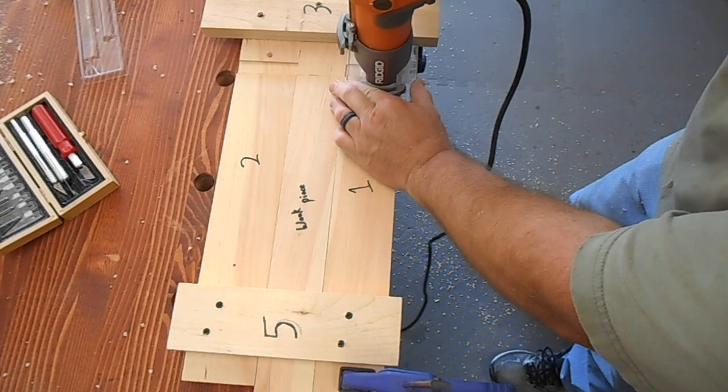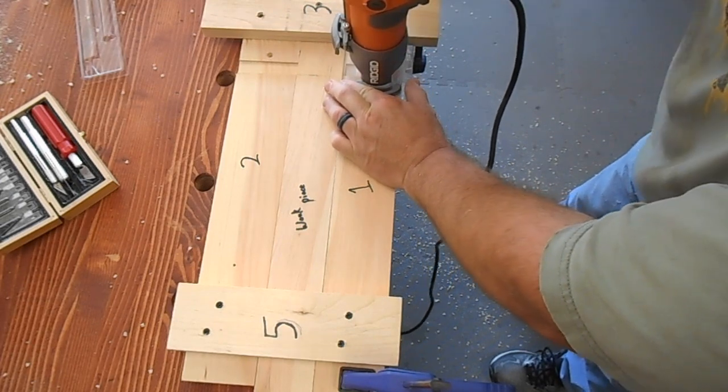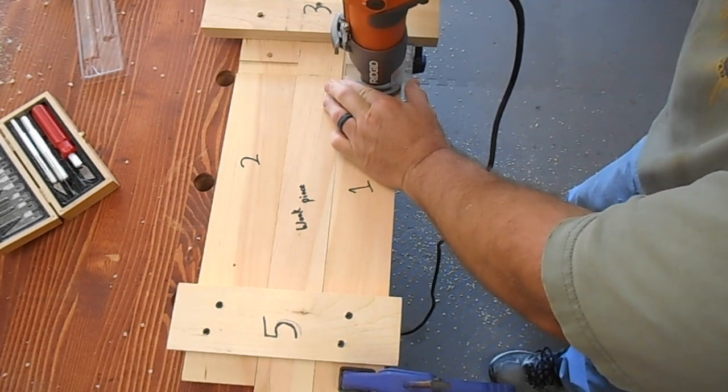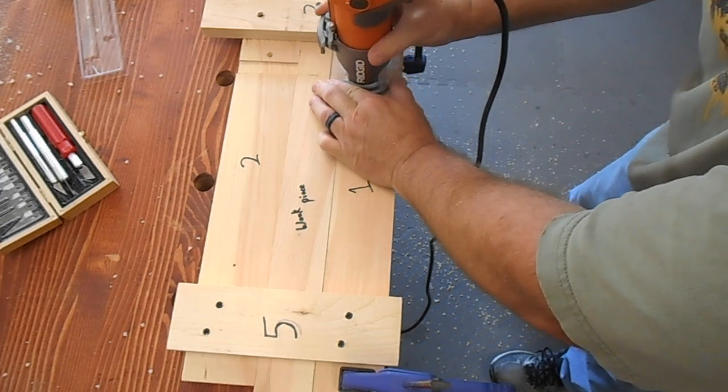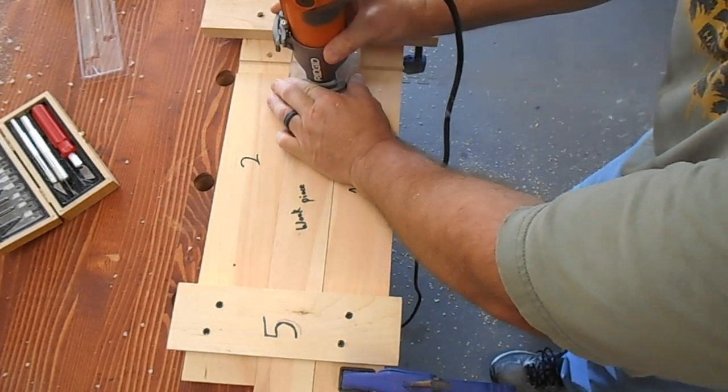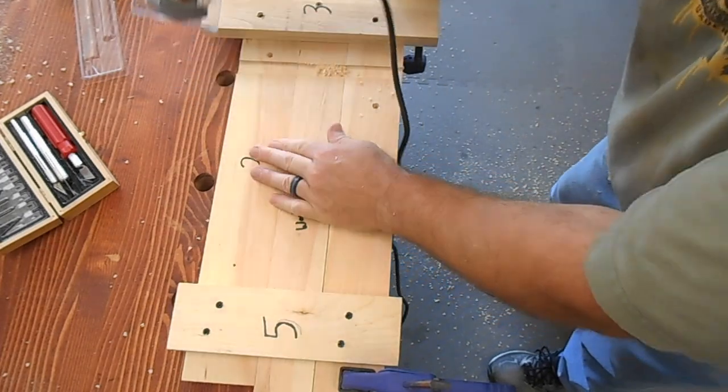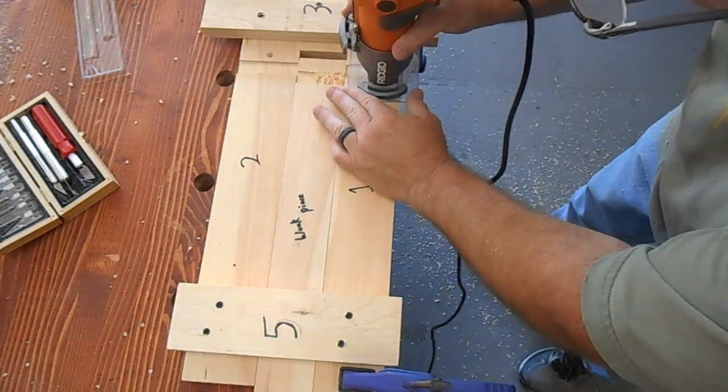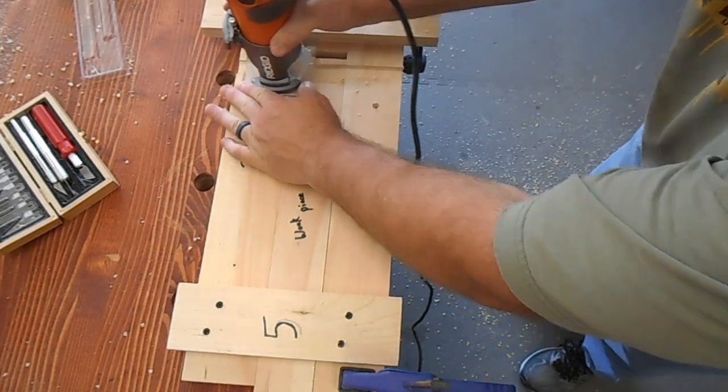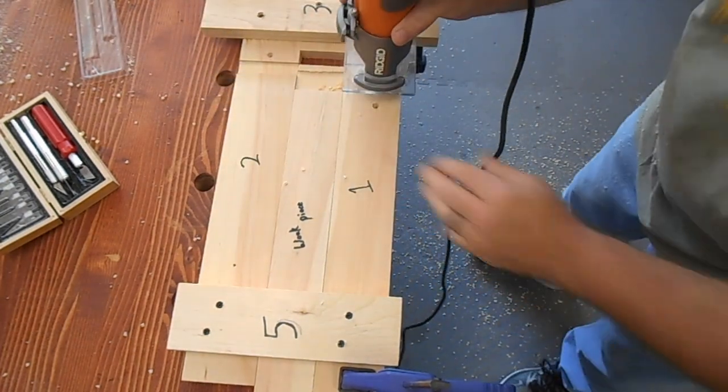Now take your router with the depth set that you need and just pass it through, keeping it against the fence and going through that track, that channel. Now pull it out a little bit and repeat. Pull out a little more and finish it up.